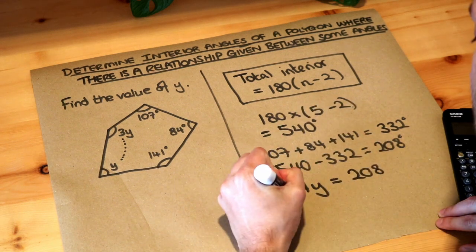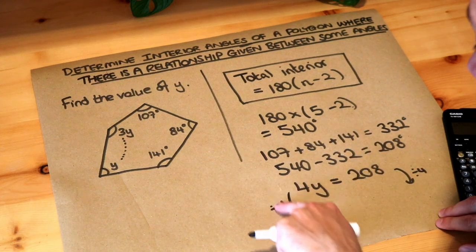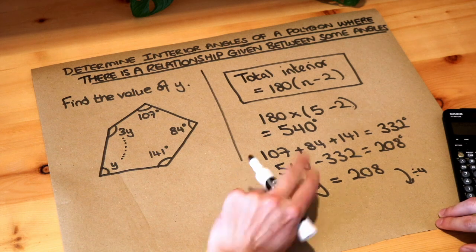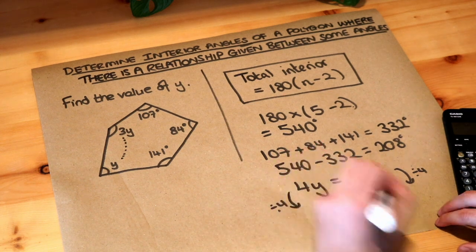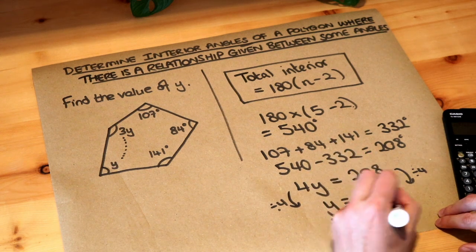And then if we divide both sides by 4, because y has been multiplied by 4 so we divide it by 4 to get rid of that times by 4, and that gives you 52 degrees and that is the final answer.